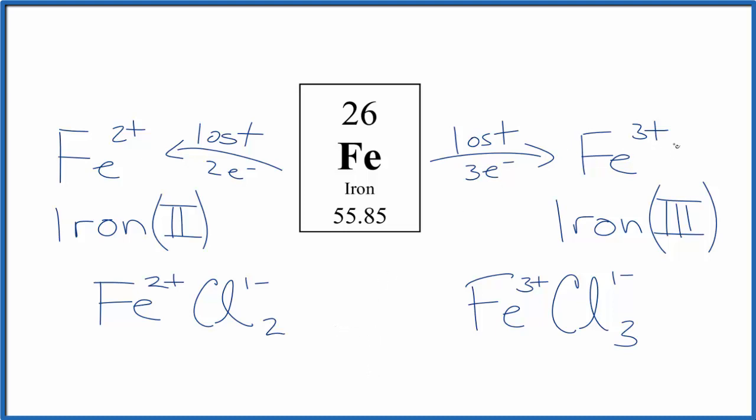Also note, we could keep losing electrons. We could have Fe four plus or five plus if we had enough energy to pull those electrons off. But typically in chemistry, you're only really going to see the Fe two plus and the Fe three plus bonded to other elements.